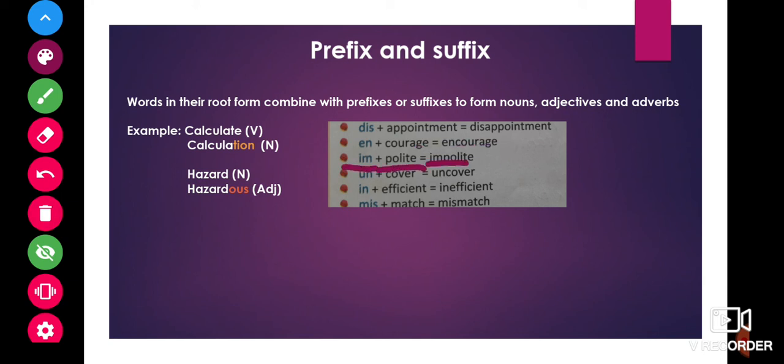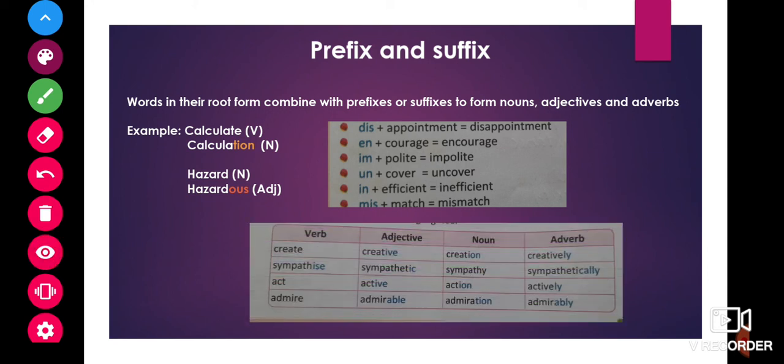Im plus polite gives us impolite. Un plus cover gives us uncover. In plus efficient gives us inefficient. And miss plus match gives us mismatch. Now, let us see some suffixes.